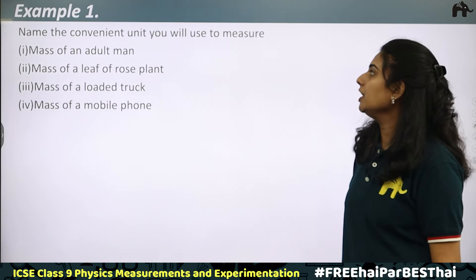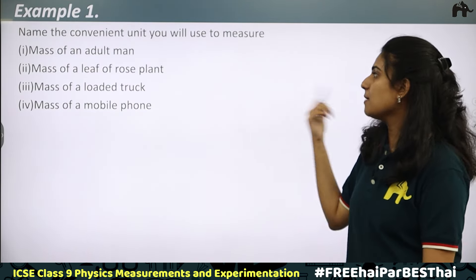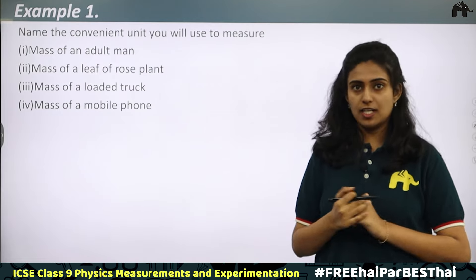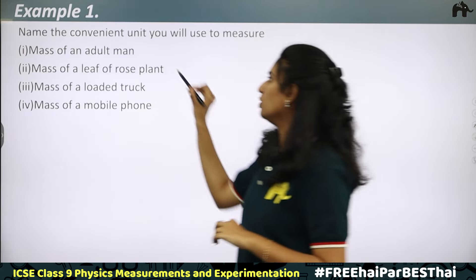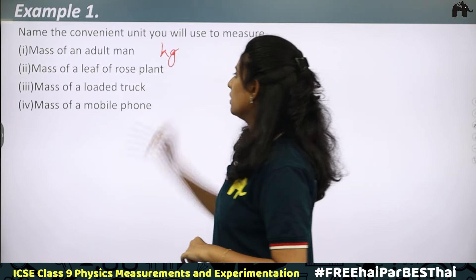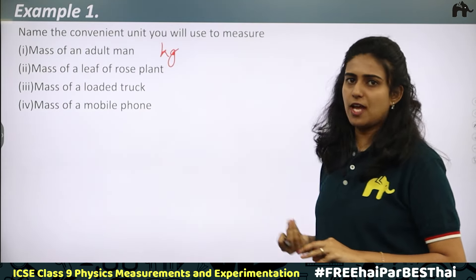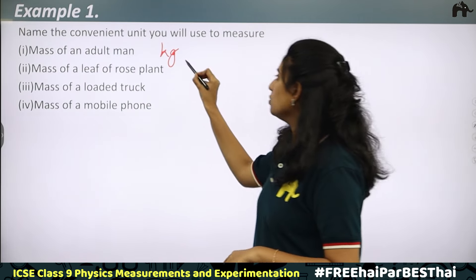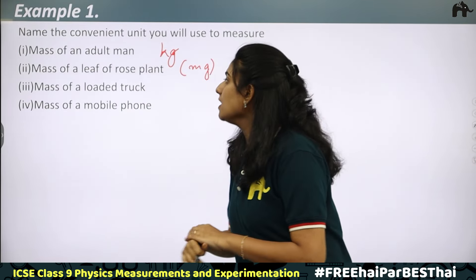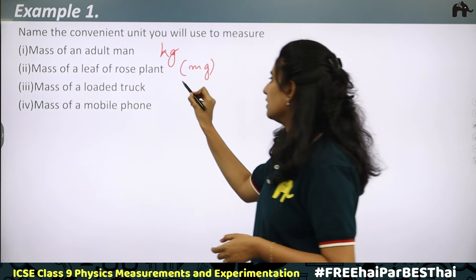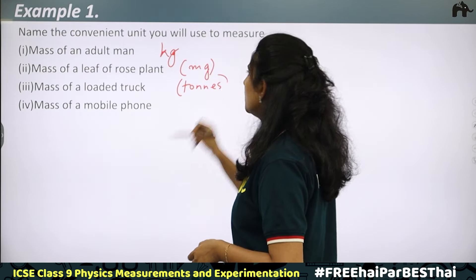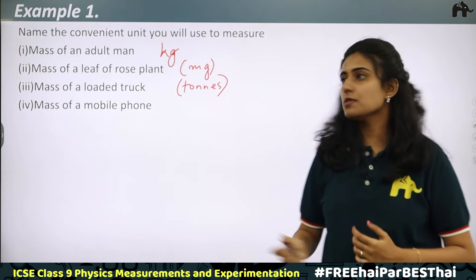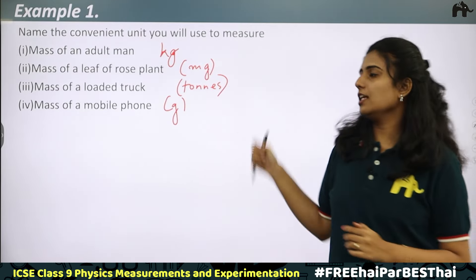Example: Name the convenient unit to use for measuring: (a) Mass of an adult man → kilogram (50-100 kg); (b) Mass of a leaf of a rose plant → milligrams (very small mass); (c) Mass of a loaded truck → tons (heavy mass, bigger unit); (d) Mass of a mobile phone → grams (moderate small mass).